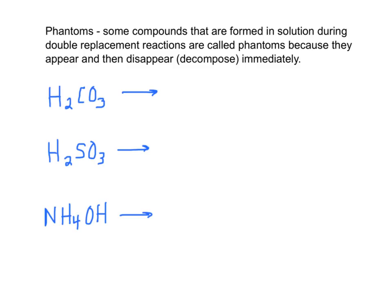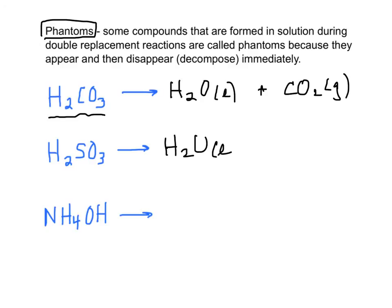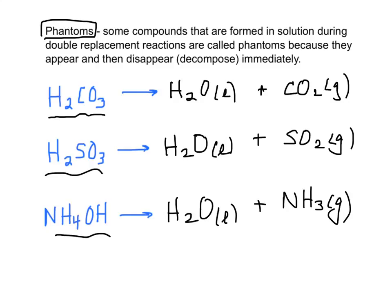Some of these reactions are going to produce things called phantoms. These are compounds that get formed in solution, and they're called phantoms because they appear and then immediately decompose into something else. You're going to have to become familiar with these because when you see them, when you make H2CO3, it's really water and CO2 gas. When you see H2SO3, it's really water and SO2 gas. So it's always water and a gas. This one's water and ammonia gas. Remember, ammonia is NH3. So these are phantoms, so let's see what happens when we see them in reactions.